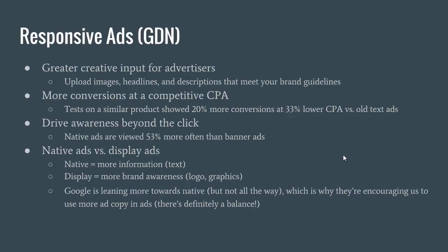Native ads generally have more information and more text on them. Display ads are going to be more for brand awareness — more graphic-heavy with a logo, and they encourage you to not really use that many words, maybe 10 to 15. With the responsive ads for the Google Display Network, they're realizing that the native ads were viewed 53% more often than banner ads. They're starting to realize that the text on the ads isn't all that bad after all, which is why they're transitioning over. Google is leaning more towards native, but not all the way, which is why they're encouraging us to use more copy in the ads.